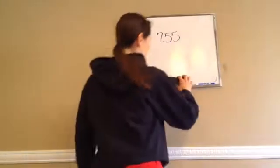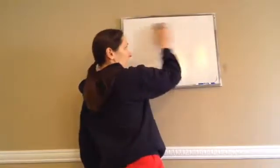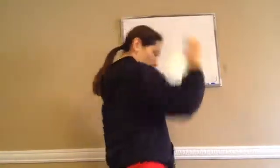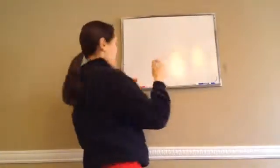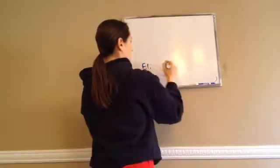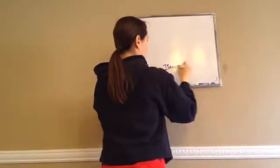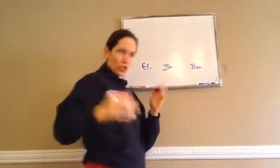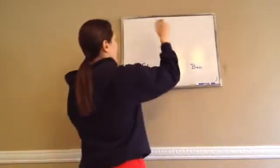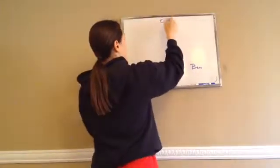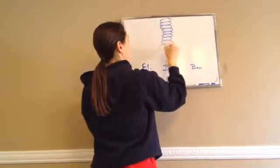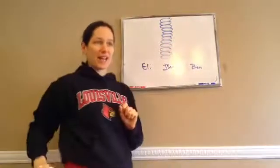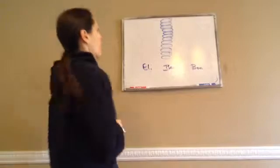All right, 7th grade, Lesson 55, this is Average Part 2. Now let's review average just really quick. Let's say Eli, Isaac, and Ben — just three people. We're going to eat 12 pancakes.